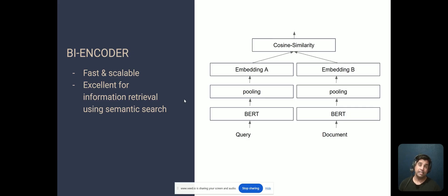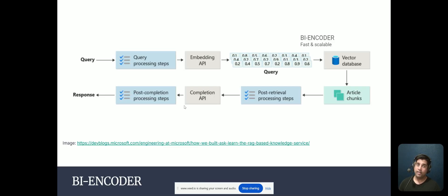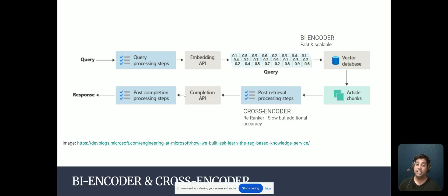Now that we have a better understanding of cross-encoders and bi-encoders, let's figure out where to place them in the RAG pipeline. Given that the bi-encoder is fast and scalable and we need to compare a query against multiple documents, it makes sense for the bi-encoder to be where our vector database is. And because the cross-encoder provides additional accuracy but can't scale and works best with a few documents, the cross-encoder would be a great solution post-retrieval — which is also often known as a re-ranker.